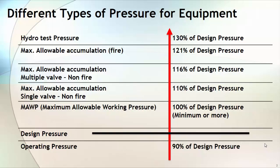One more thing I want to emphasize: your maximum allowable working pressure will not remain the same throughout the life of the equipment. Because once your equipment is in operation it may be subject to some wear, tear, and corrosion that will reduce the actual thickness of the plate. So after certain years of operation you have to check the actual thickness available and recalculate the maximum allowable working pressure.